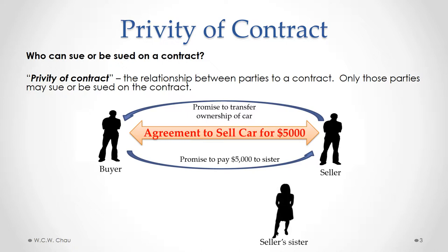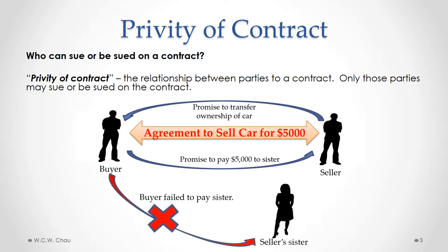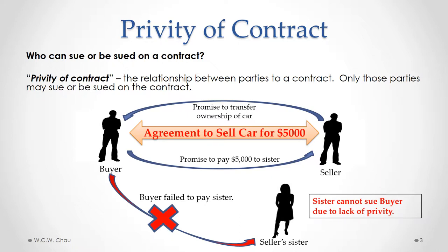So there's a seller's sister, and let's say the buyer fails to pay the sister, even though ownership has already been transferred to the buyer. What are the seller's sister's legal rights here? Under the doctrine of privity of contract, the sister cannot sue the buyer due to the lack of privity.